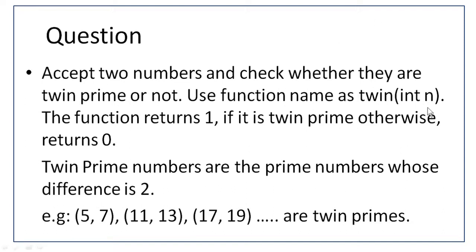Use the function name as twin with parameter integer n. The function returns 1 if it is a twin prime, otherwise 0. Notice that there is only one parameter — one number. If it is prime, return 1, otherwise return 0. Since we accept two numbers, we call this function two times. If both numbers return 1, then both are prime numbers. When we see the program I will explain that.